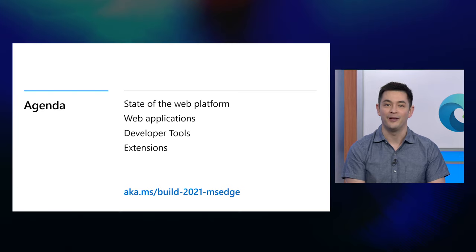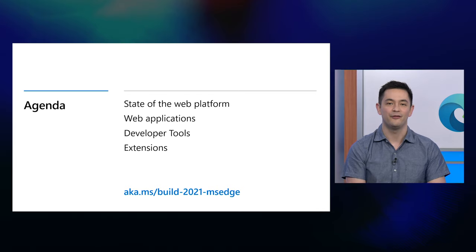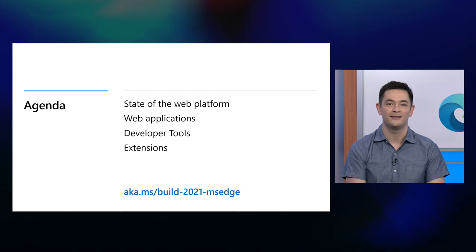We'll start with an update on the web platform and our commitment to building more powerful capabilities and better fundamentals powered by open web standards and open source. Then I'll turn it over to Zohair, who will show you how the same platform can be leveraged to build powerful desktop web applications using standards-based or hybrid development patterns with PWAs and WebViews. We'll walk through improvements in the browser developer tools to build more approachable experiences for inspecting and debugging your sites and apps.